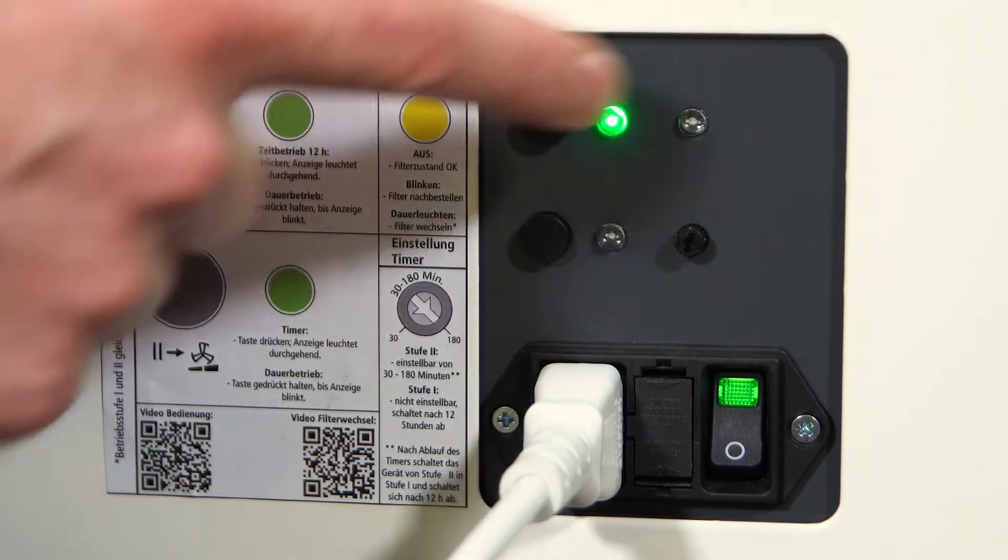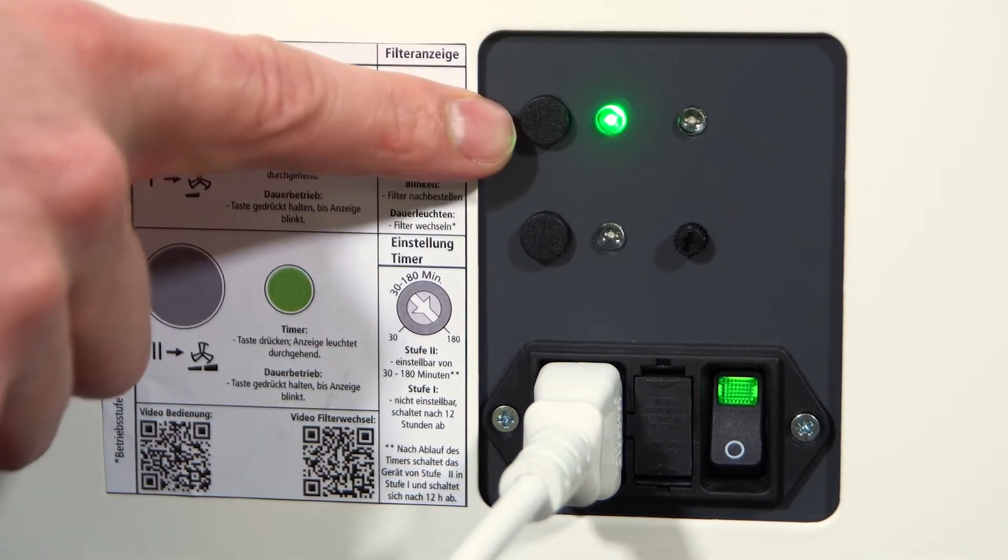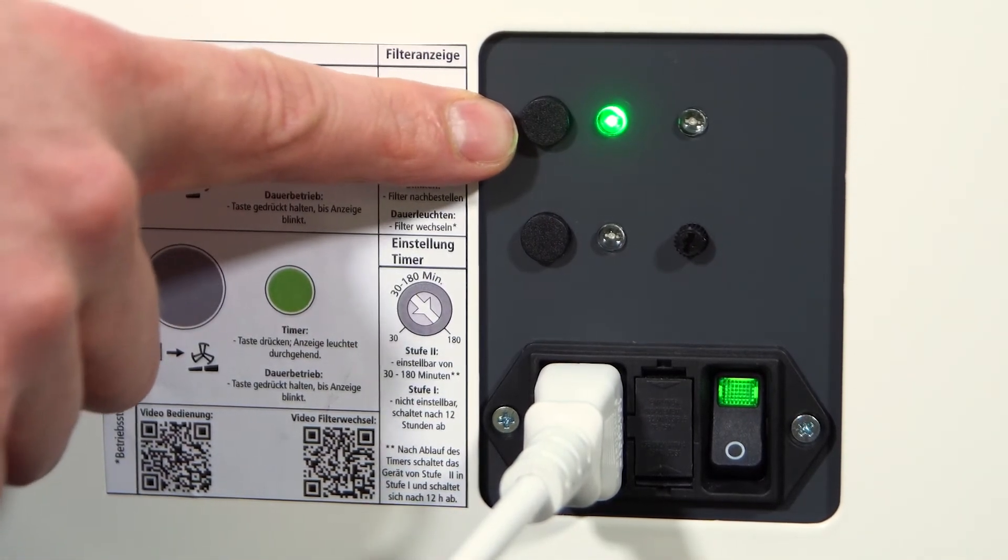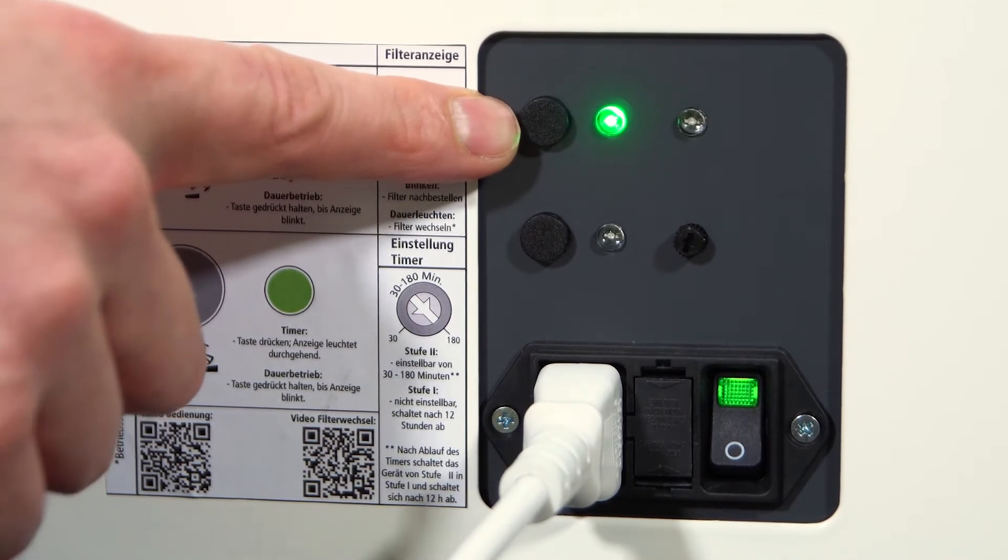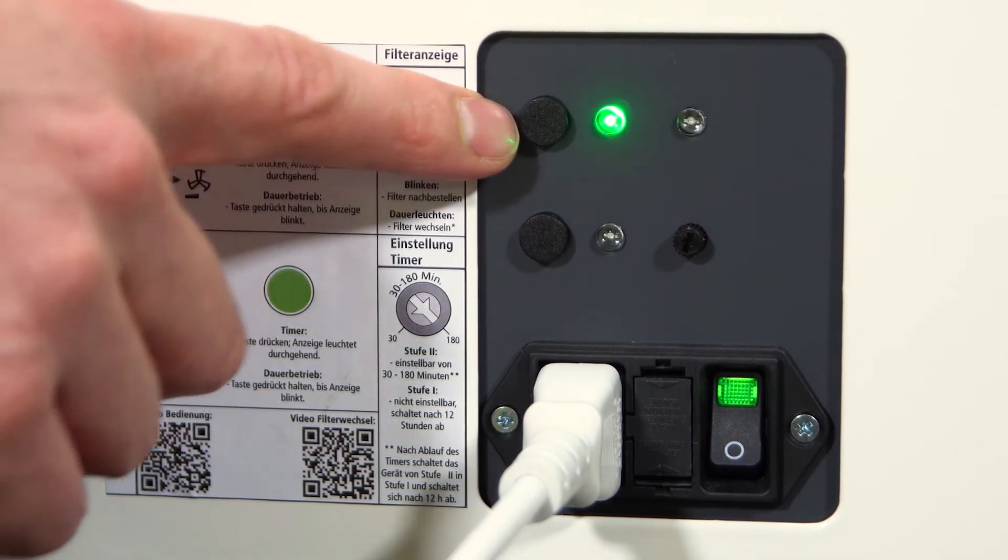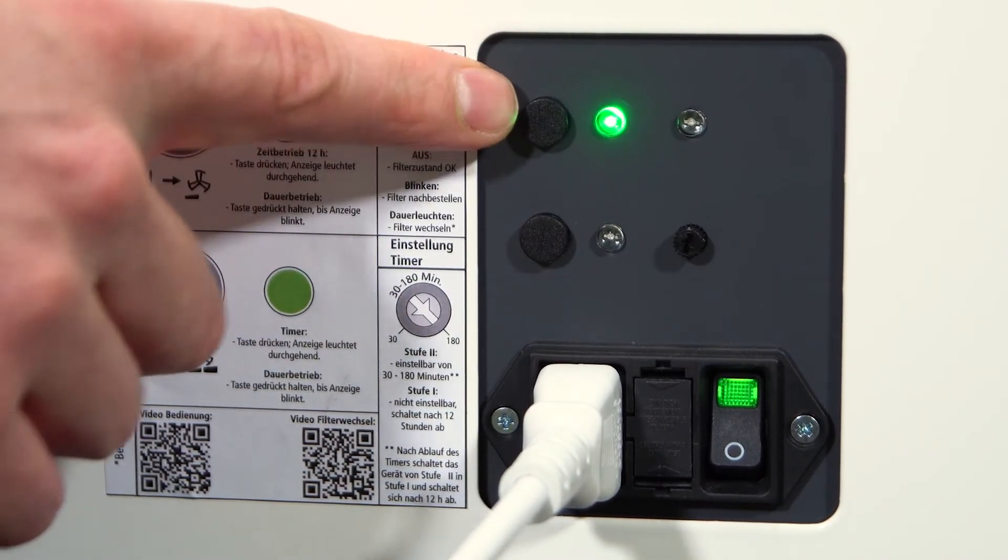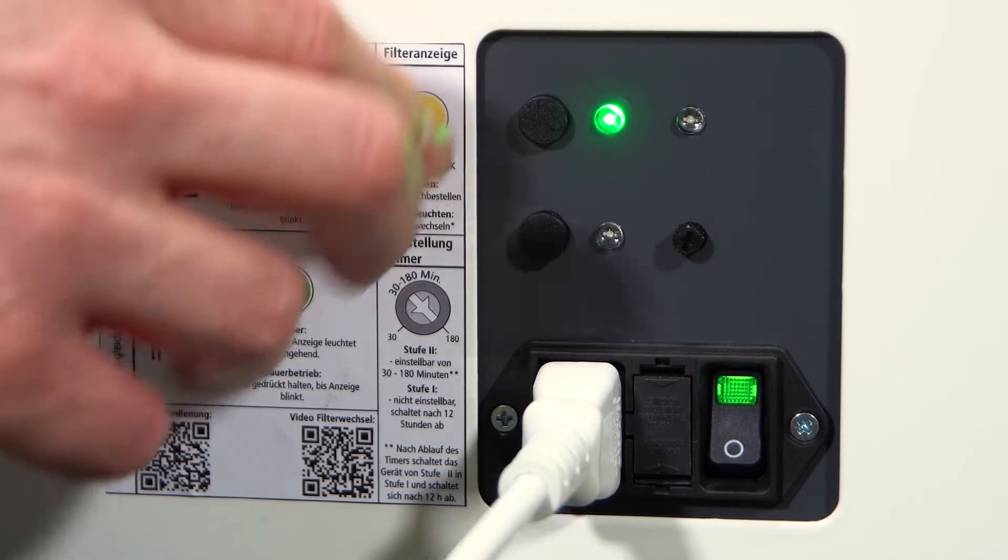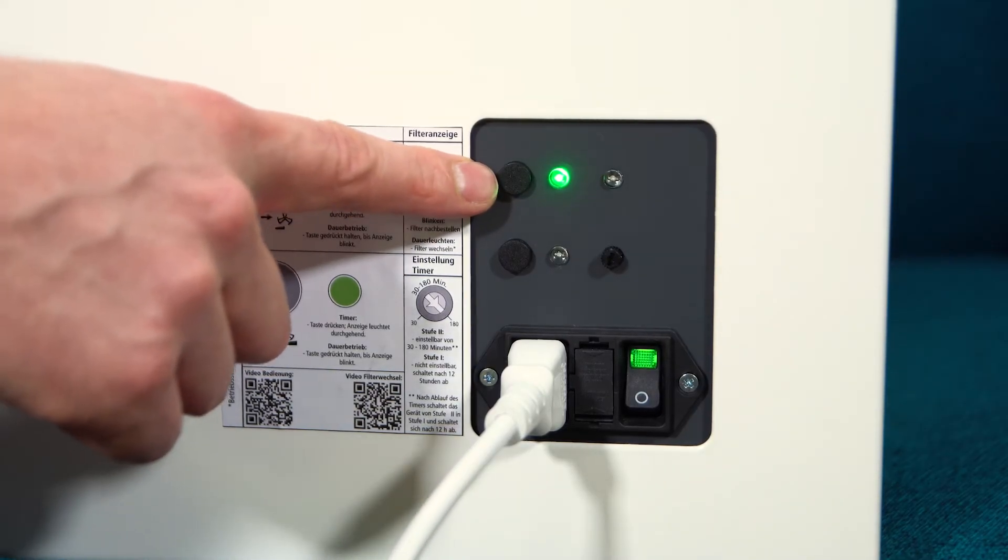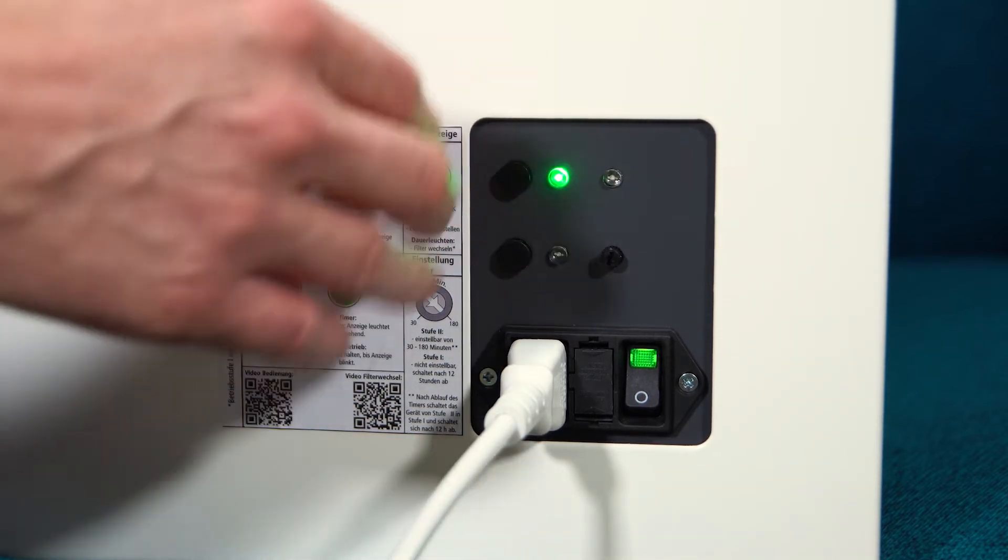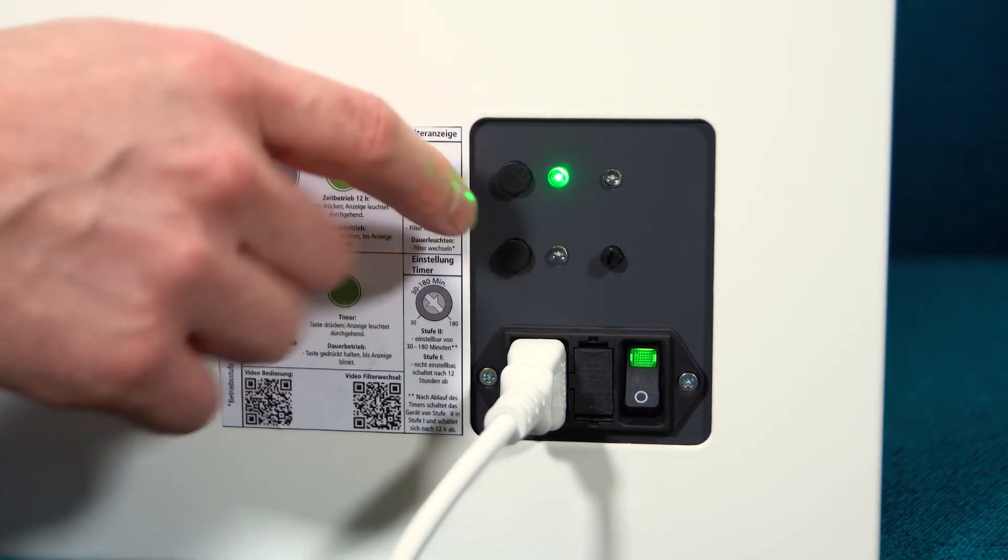At operating level 1, indicated by its continuously glowing green LED, the timer is always in a preset timer mode set to 12 hours. After this time has expired, the air purifier goes into standby and switches off. With this setting, the air purifier will be prevented from continuing to run unattended, for example without people in the room during weekends.